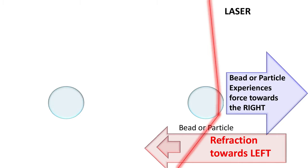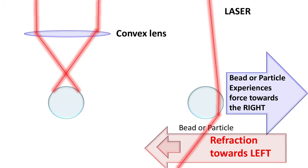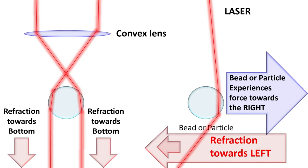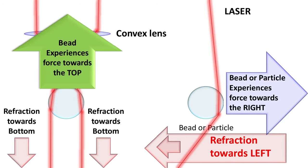Now, if the laser is focused using a convex lens and the bead is just below the focal point, then something amazing happens. The bead is refracting the light towards the bottom and by doing so, it experiences net force towards the top. At this stage, the bead is now trapped by the laser and it can be moved in any direction using the laser.